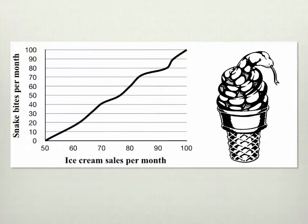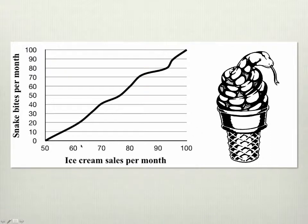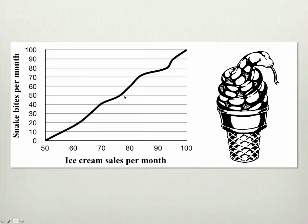Let's look at another correlation. If we were to go to Phoenix, we could measure the number of ice cream sales made per month by ice cream vendors, and we could also measure the number of snake bites that were reported to the poison control center every month. As the number of ice cream sales goes up, snake bites per month go up. So this is clearly a very nice, strong, positive correlation, not very messy at all.